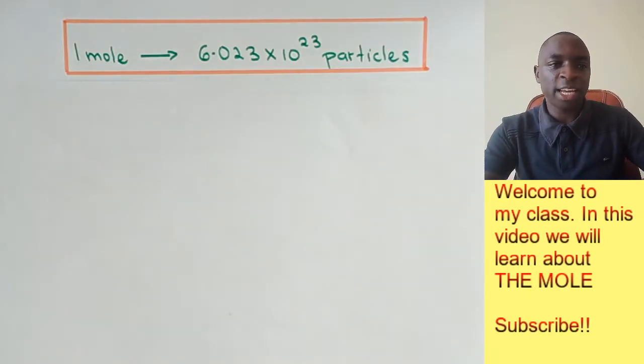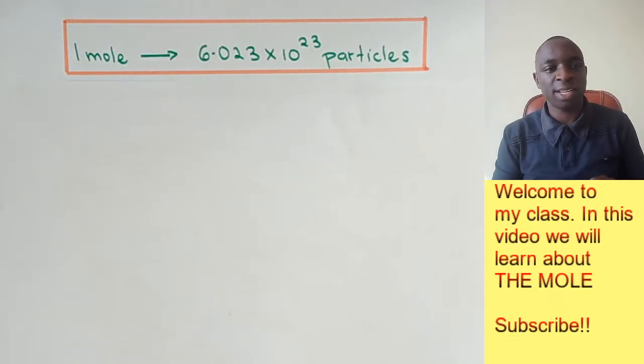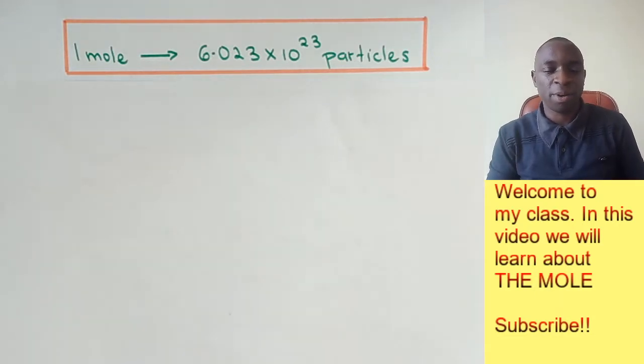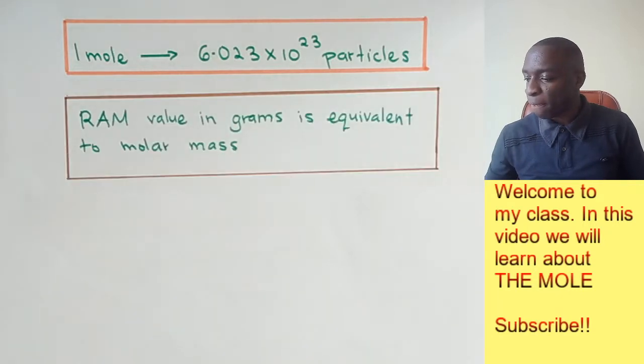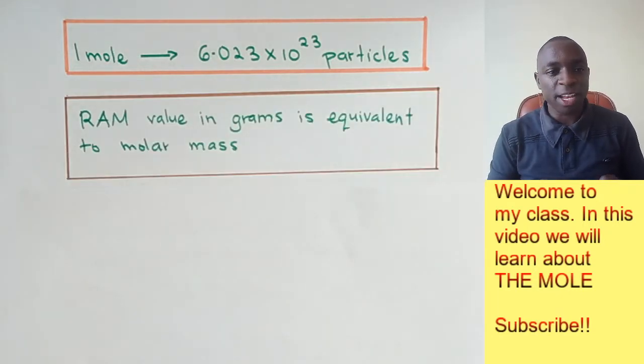As a recap, I'd like to remind you that one mole of a substance contains 6.023 times 10 to the power of 23 particles. It also follows that the relative atomic mass value in grams is equivalent to the molar mass.